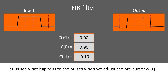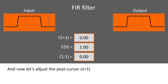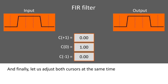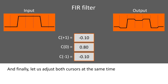Let us see what happens to the pulse when we adjust the precursor C minus 1. Now let's adjust the post-cursor C plus 1. And finally, let us adjust both cursors at the same time.